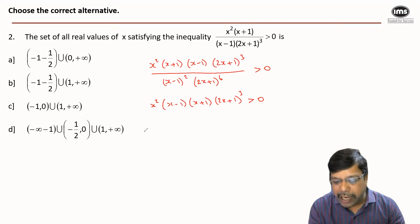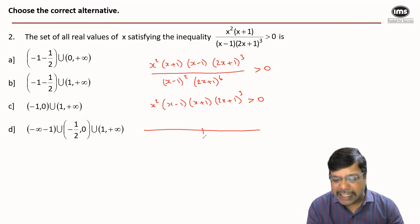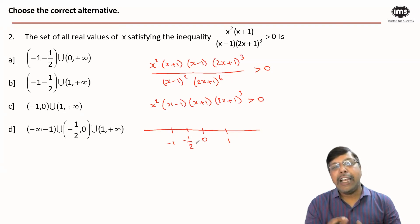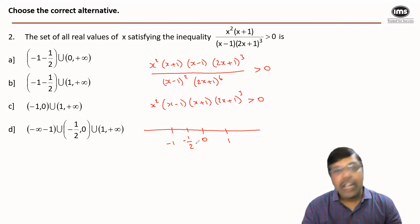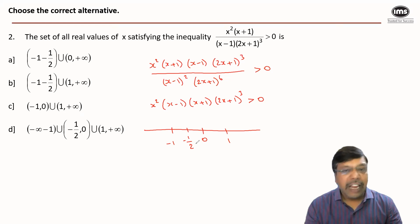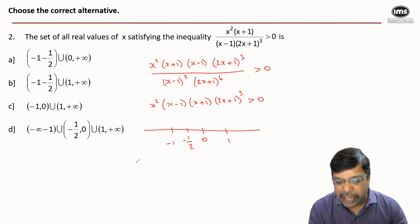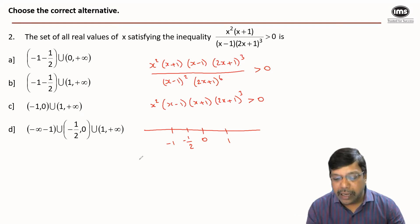Drawing a number line to plot these values: x = 0, x = 1, x = -1, and x = -1/2. Let us understand how this expression behaves in each interval in terms of positive or negative. If I substitute x = -2, the entire expression becomes negative.